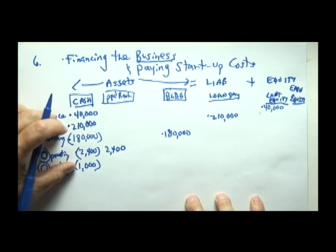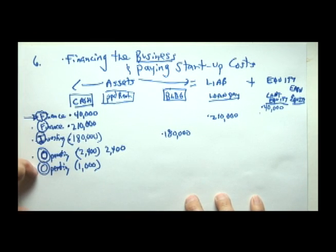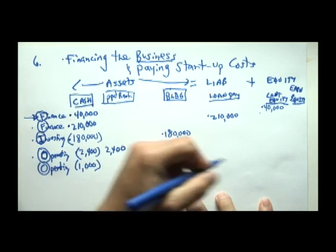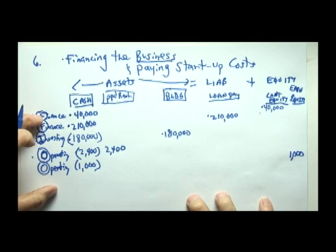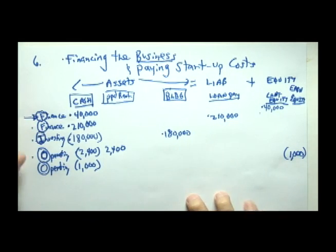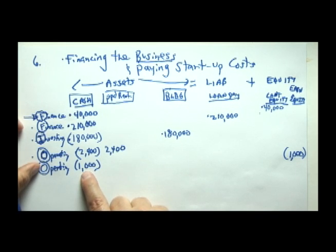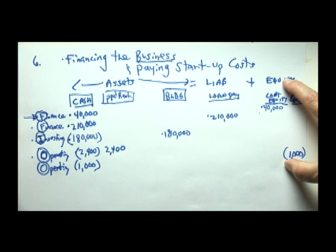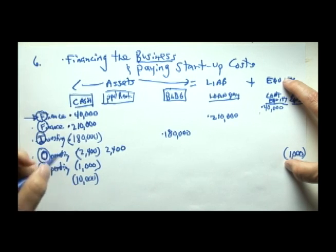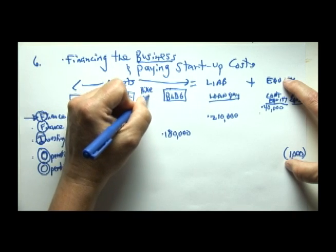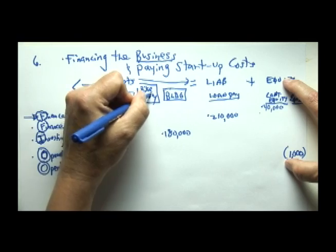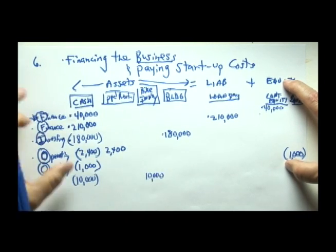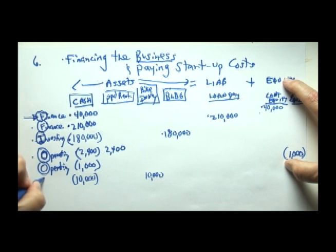Advertising is usually not considered a prepayment if we're running the ad this month — rather, it's a reduction in equity. Any reductions in equity that occur frequently are called expenses. So this $1,000 outflow for advertising is a reduction of earned equity, and we call that advertising expense. Next, the company buys $10,000 worth of bike inventory (abbreviated INVY). Inventory goes up $10,000, cash goes down $10,000, and since we're in business to buy and sell bikes, the purchase of inventory is also an operating activity.